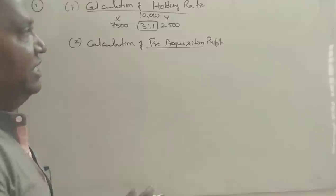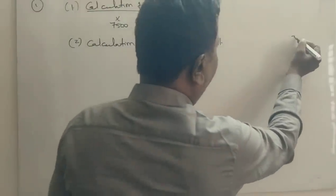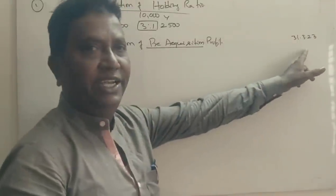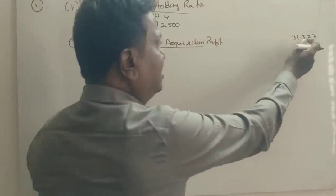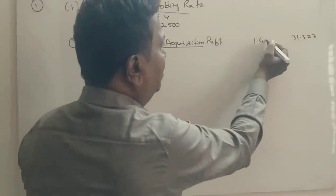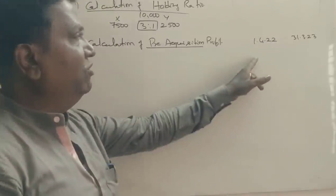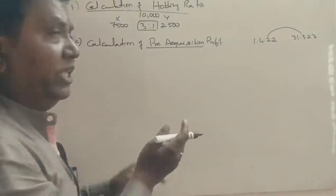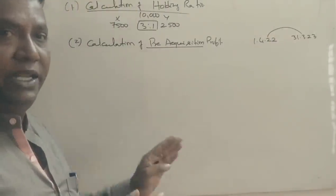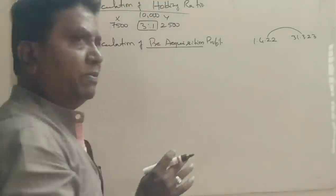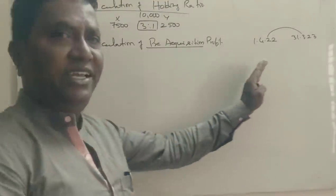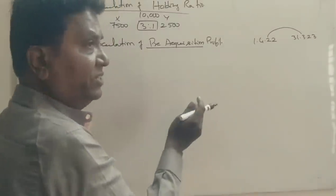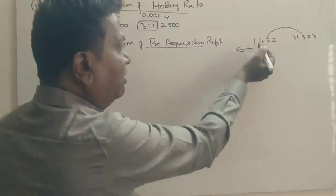This involves the holding ratio calculation as of 31st March. When the acquisition date is reached, the profits that Y company earns from that point are the current year profits and the current year reserves. Any profits or reserves before the acquisition date are considered pre-acquisition profit.